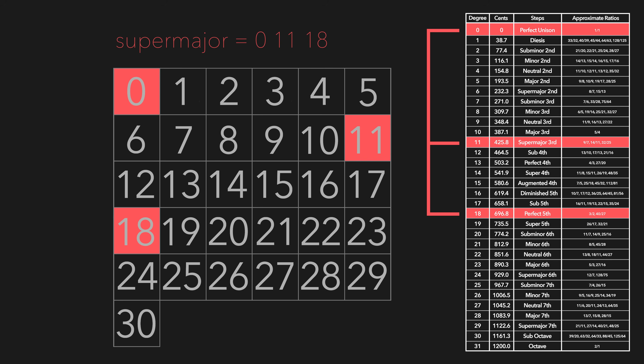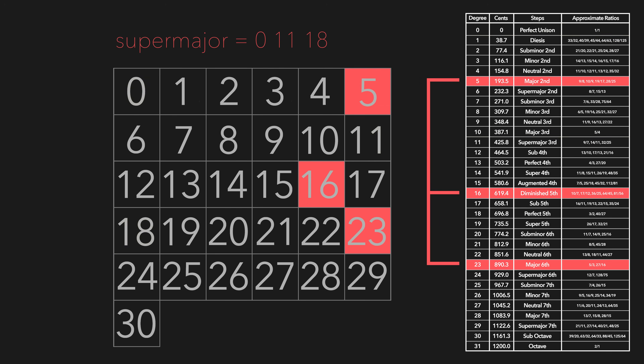If we keep the distance between each interval the same and transpose over a few notes, the EDO step numbers change — instead of 0, 11, 18 we now have 5, 16, 23. But the supermajor chord structure remains intact because the intervallic distance between each note of the triad stays static regardless of a positional shift. Usually it's easier to just define all chords on 0 and make a note about what the reference pitch is.